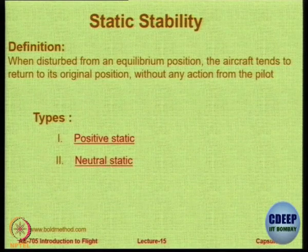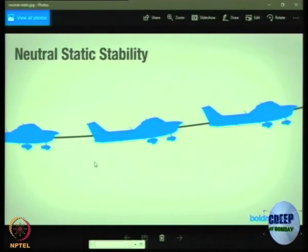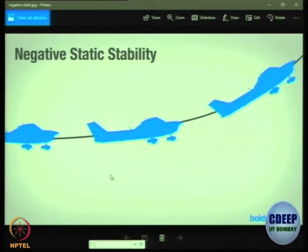Then you have neutral static stability, in which case there will be no attempt to become undisturbed — neither will it come back to the position nor will it go away. If disturbed, it remains disturbed. This is neutral static stability. The third is negative static stability: if you disturb it and on its own it goes further away, we call that negative static stability.